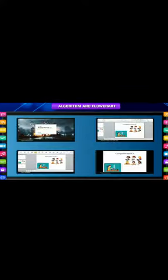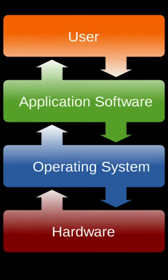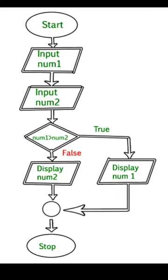Any task that can be carried out systematically using a step-by-step method can be performed by a computer, and we need an algorithm and flowchart by defining those steps for doing a particular task. A computer program is a set of instructions given step-by-step to a computer. The computer then executes the instructions following each step mechanically to get the desired result. Algorithms and flowcharts are the two important methods to understand computer programming.